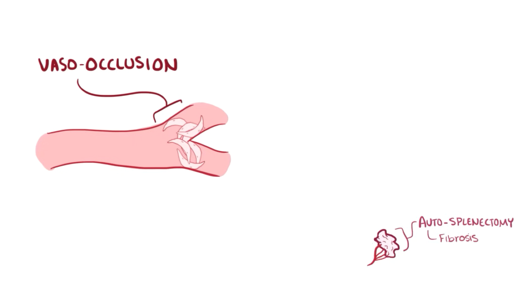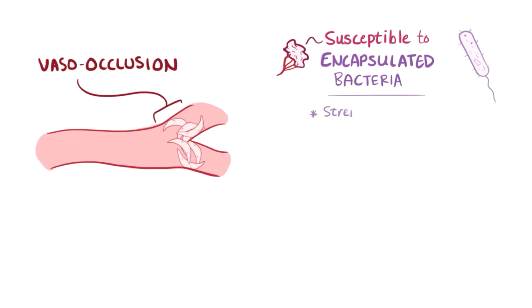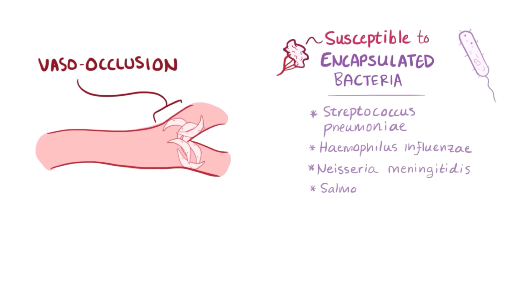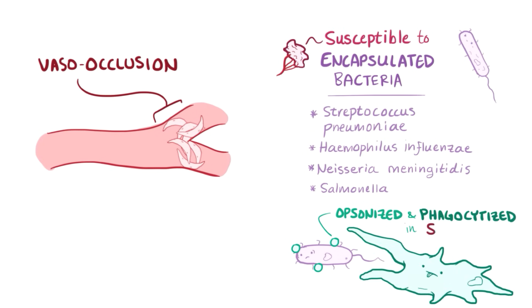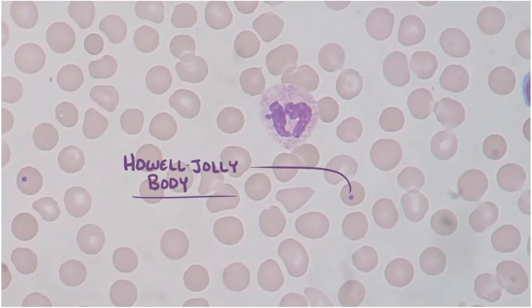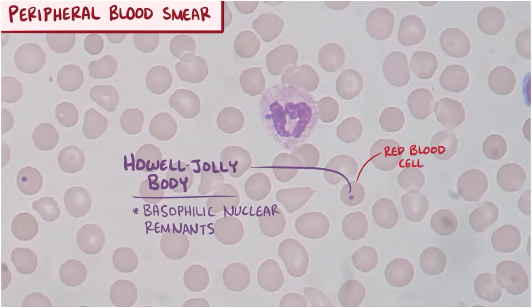Having an absent or non-functional spleen makes a person susceptible to encapsulated bacteria, like Streptococcus pneumoniae, Haemophilus influenzae, Neisseria meningitidis, and Salmonella species, since encapsulated bacteria are normally opsonized and phagocytized by macrophages in the spleen. It also leaves a person with Howell-Jolly bodies, which are basophilic nuclear remnants in red blood cells, which can be seen on a peripheral blood smear.